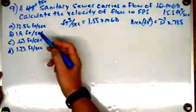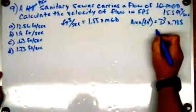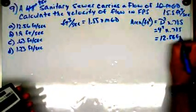So I'm going to get 4 feet squared times 0.785, and we'll go 4 times 4 times 0.785, and that's going to give me 12.56 feet squared.